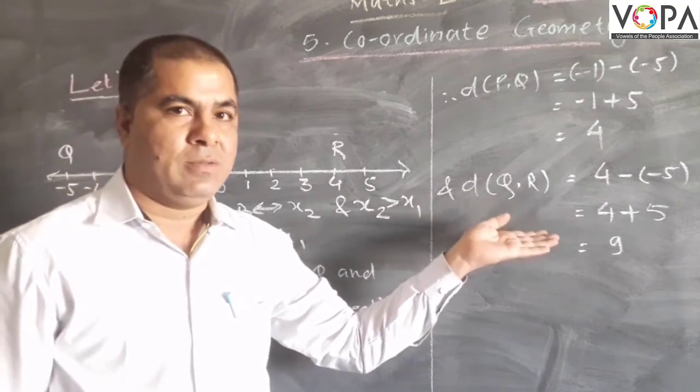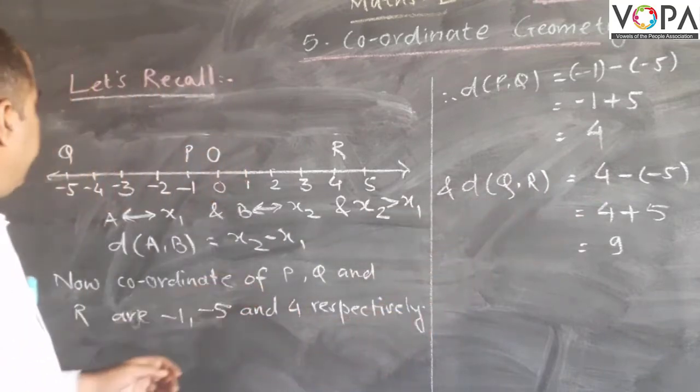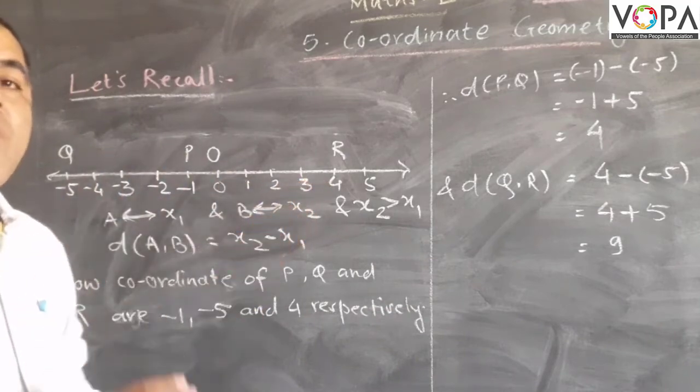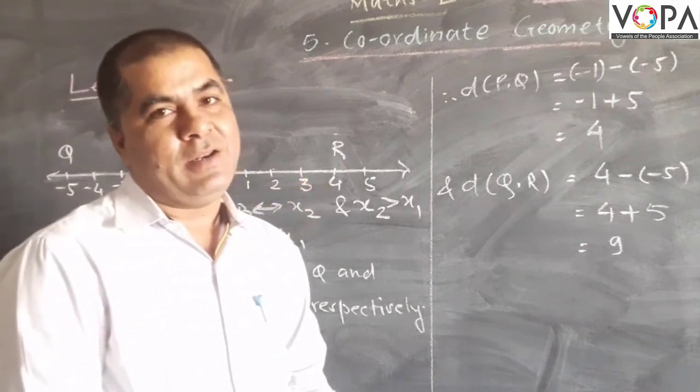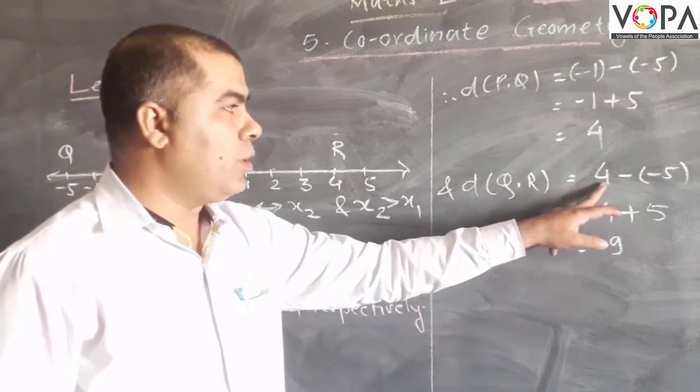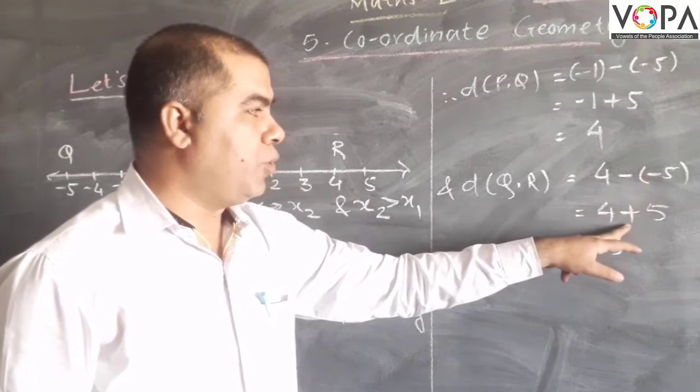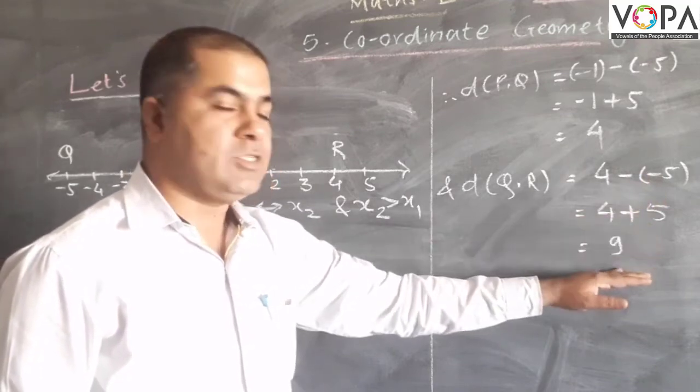Now consider to find the distance between Q and R. Here the coordinate of Q is -5 and R is 4. Now R is greater than -5, so 4 minus (-5). These two negative signs become positive: 4 + 5 equals 9.